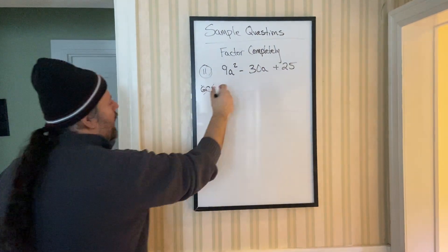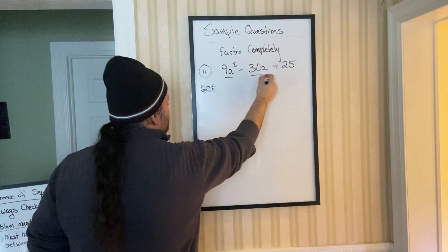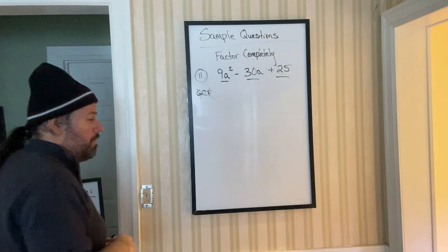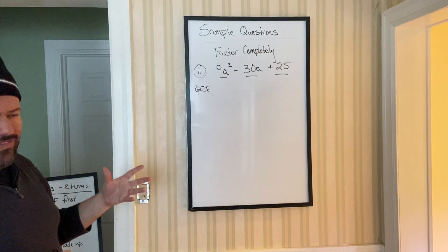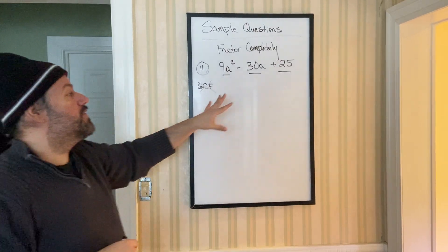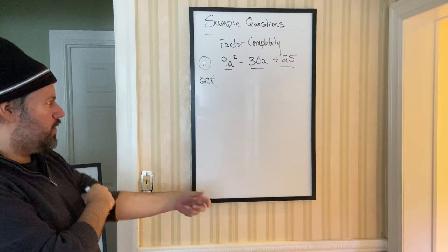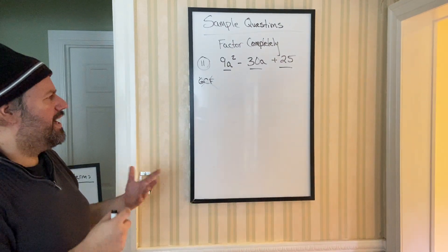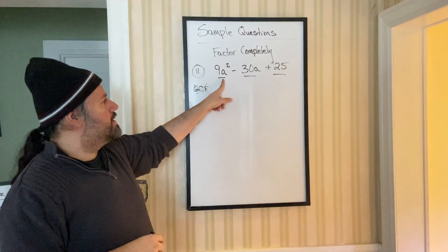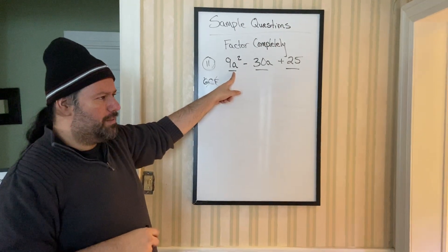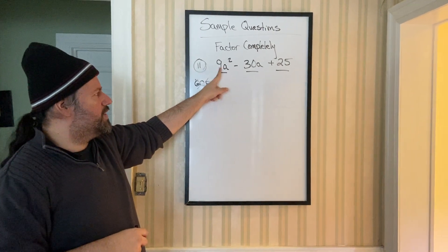So we count how many terms that there are. One, two, three. Now 6.5 says you supposed to recognize that this is a perfect square trinomial. You might be saying wait how do you recognize this is a perfect square trinomial. Because the first term is a perfect square and we just learned perfect squares.